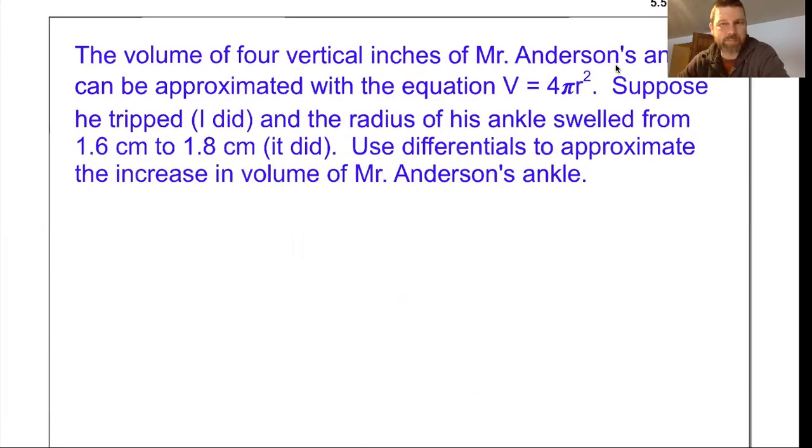All right, last example, a little word problem so we can get some actual meaning in it. It says the volume of four vertical inches of Mr. Anderson's ankle can be approximated with the equation V equals 4πr². It's true, that actually is the equation. Suppose he tripped, oh, this shouldn't say four vertical inches, that should say four vertical centimeters. My bad. Suppose he tripped, which I did, and the radius of my ankle swelled from 1.6 centimeters to 1.8 centimeters, which it did. This means I want to approximate the increase in volume. So I've got an equation for volume. Volume is 4πr².